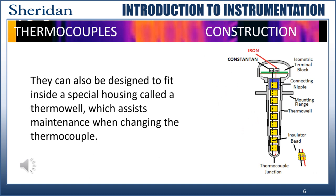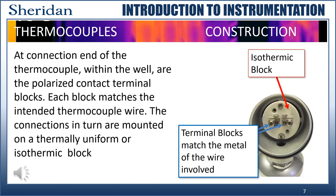Thermocouples can also be designed to fit inside a special housing called a thermal well, which assists maintenance when changing the thermocouple. At the connection end of the thermocouple within the well are the polarized contact terminal blocks. Each block matches the intended thermocouple wire. The connections, in turn, are mounted on a thermally uniform or isothermic block.